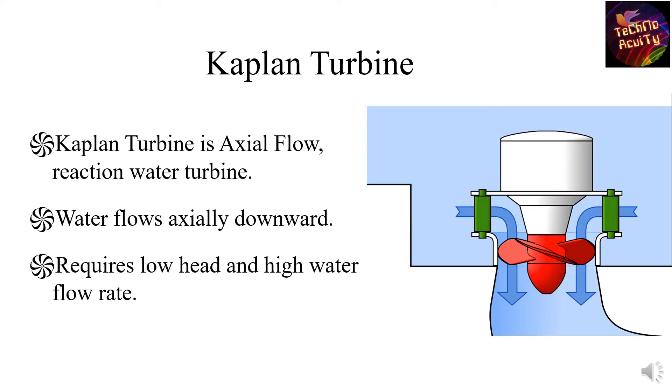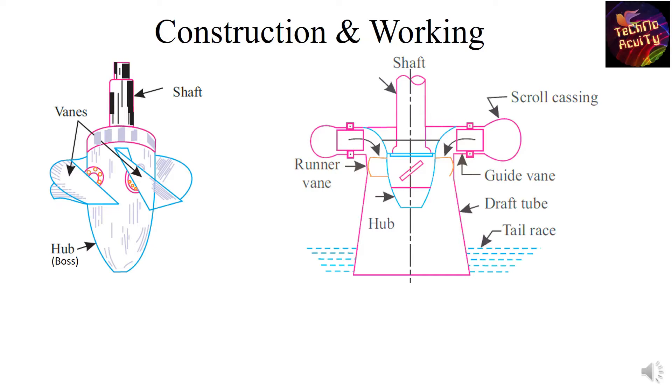Kaplan turbine is an axial flow reaction water turbine. Water flows axially downward and this type of turbine requires low head and high water flow rate.